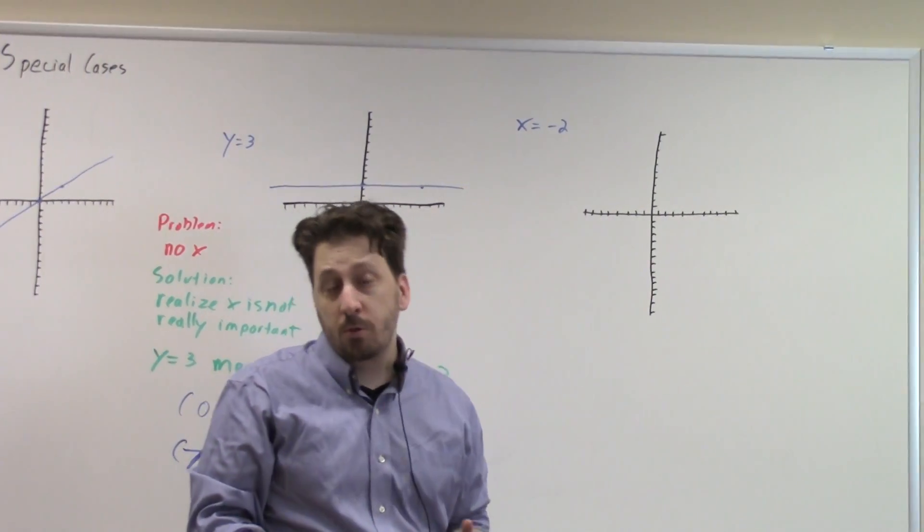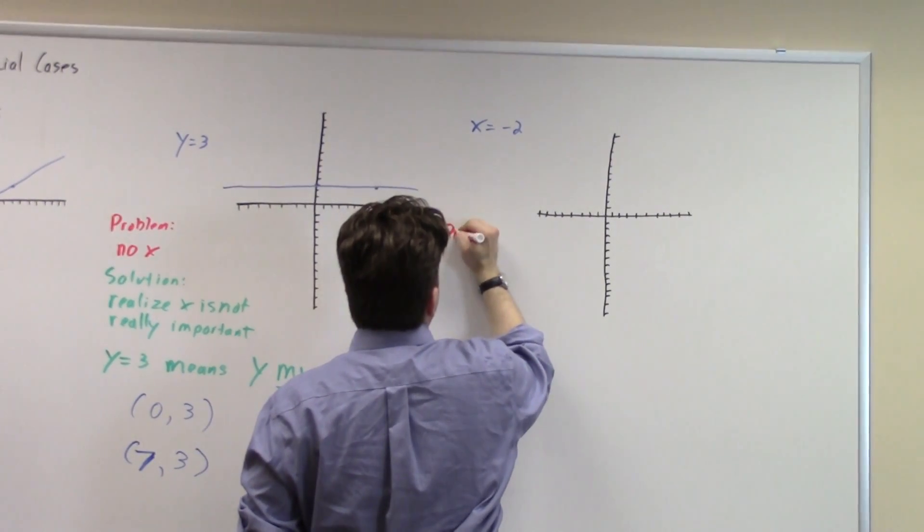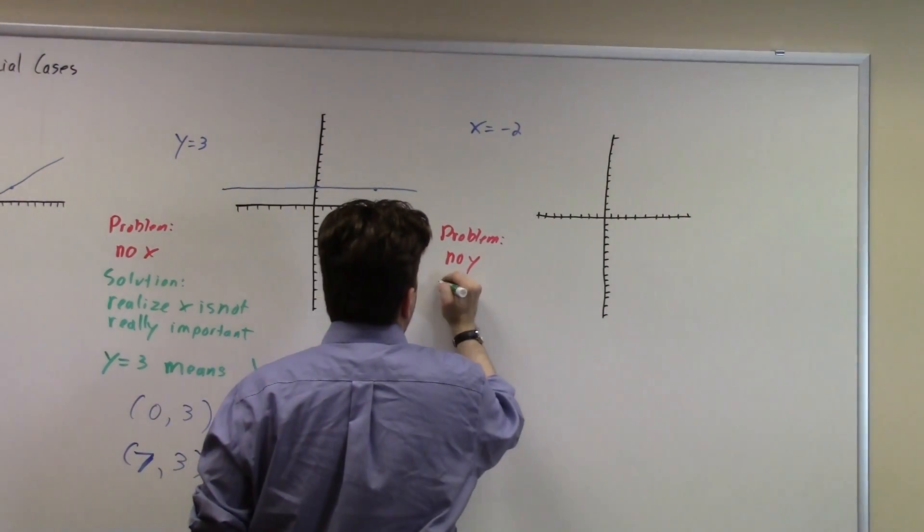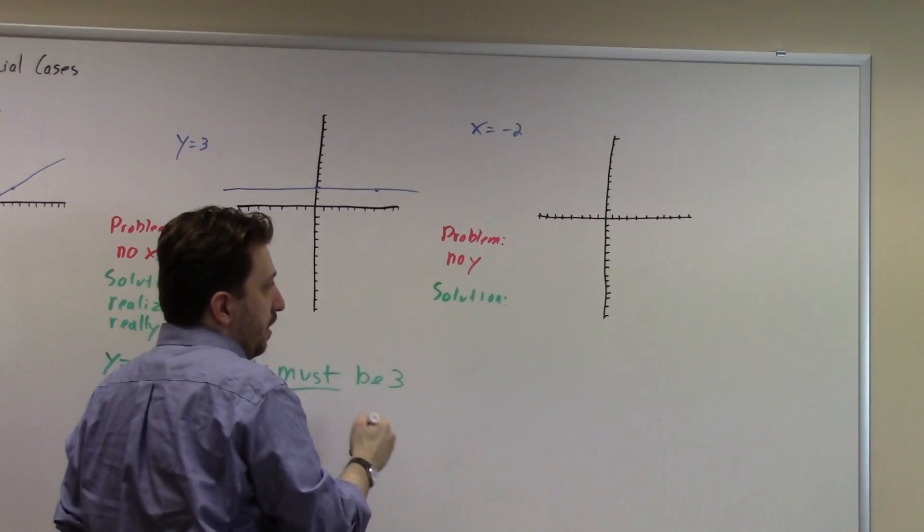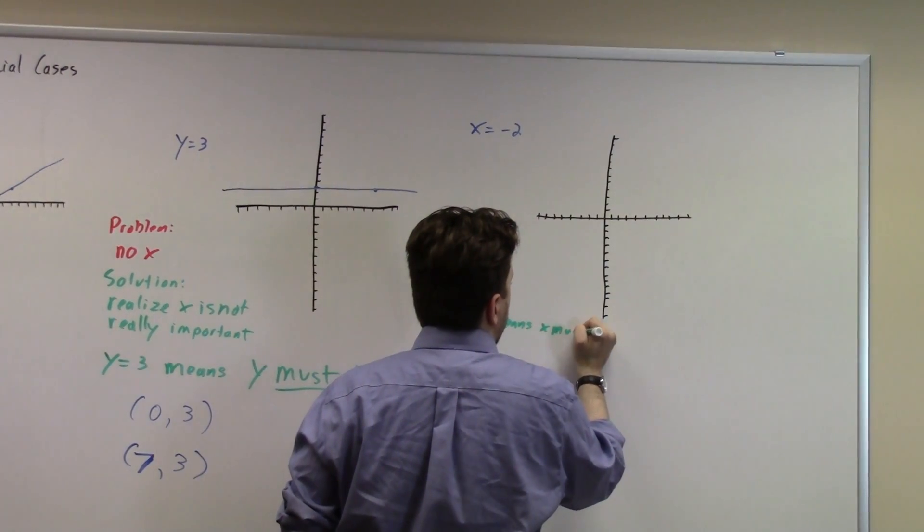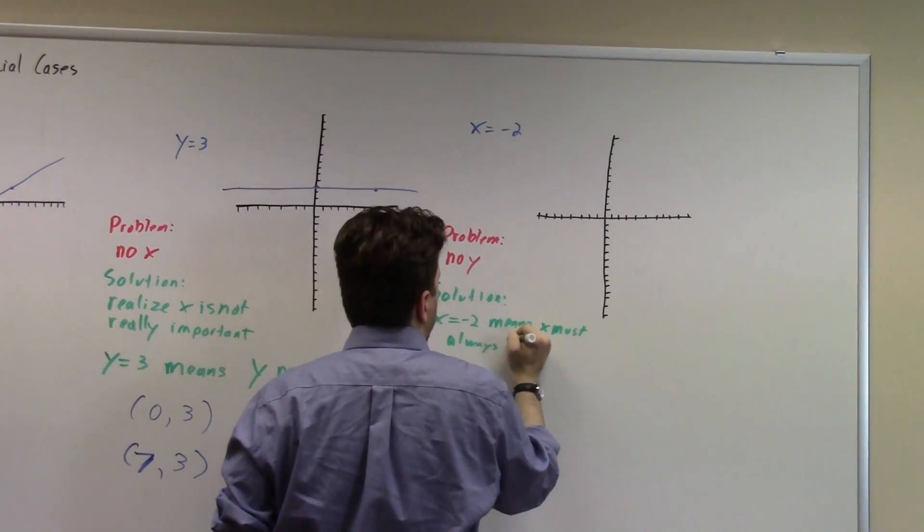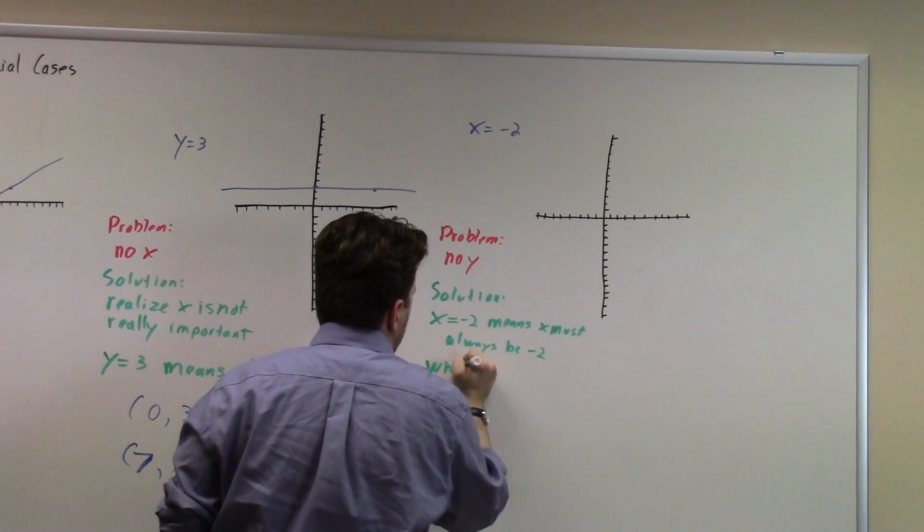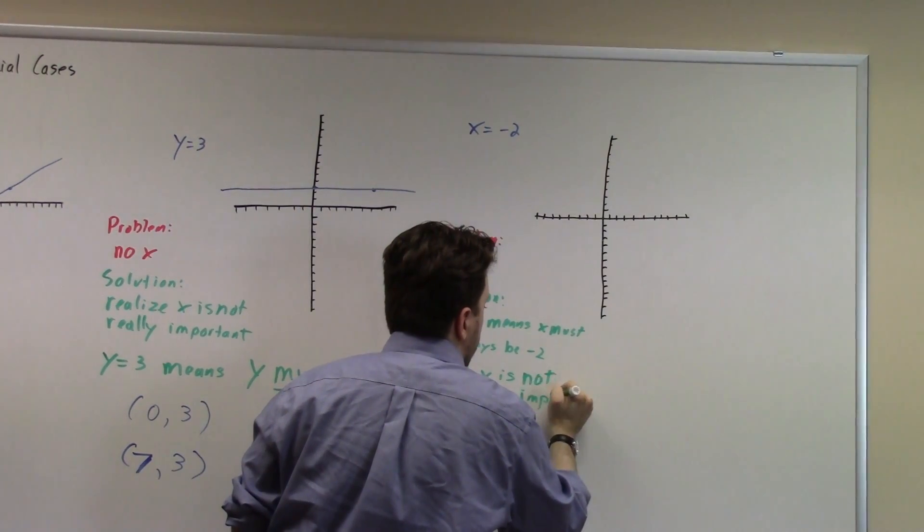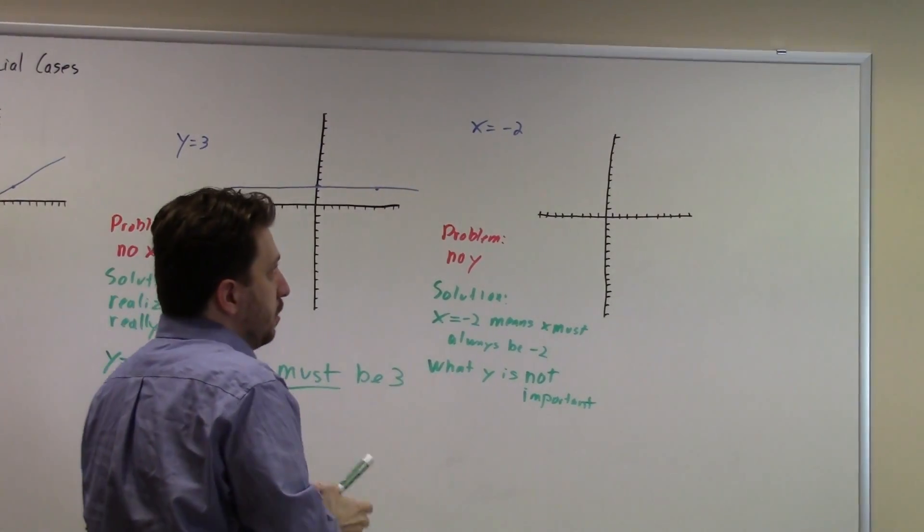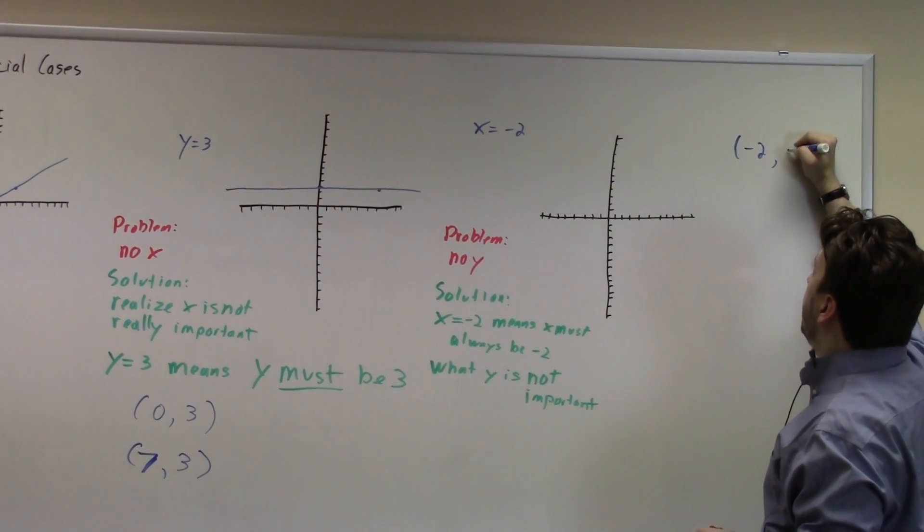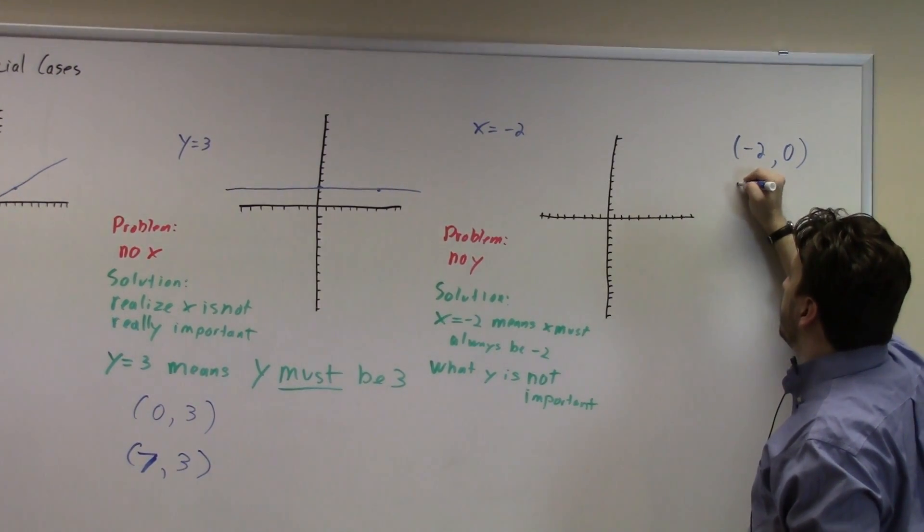So in a lot of ways, this is exactly the same, except we have x equals negative two. So here our problem is that we have no y. And our solution to this is that when we see x equals negative two, that means x must always be negative two. And what y is is not important. So when I think about my points for this graph, I need to have points where my x value is negative two. So I'm going to start off with negative two and zero.